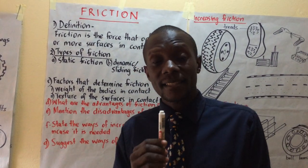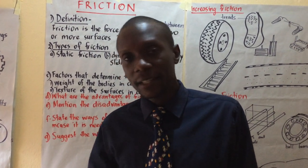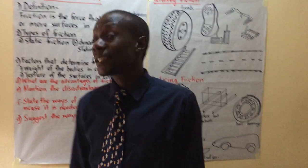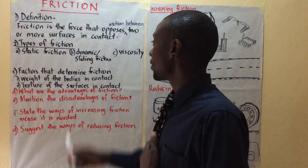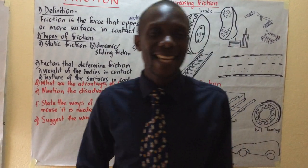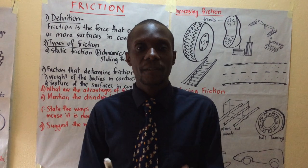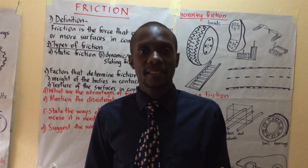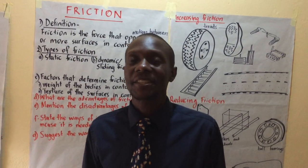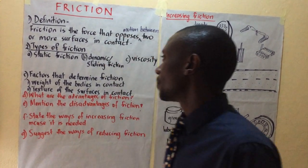Dynamic or sliding friction is the type of friction that exists between moving bodies or objects — for example, a ball rolling on the floor or a vehicle tire rolling on the road. That is dynamic or sliding friction. Viscosity is the type of friction that exists between liquids and gases. When you are swimming you feel viscosity; when you are on a parachute going down to the ground, that is viscosity.